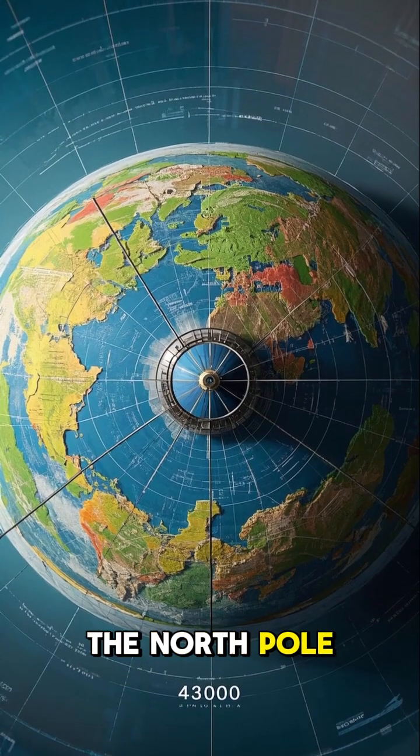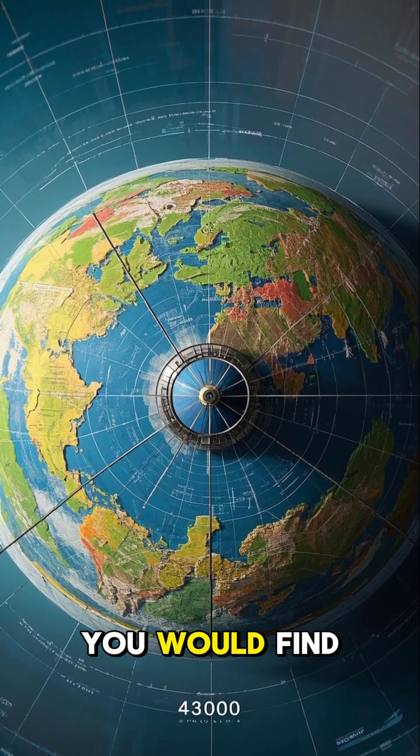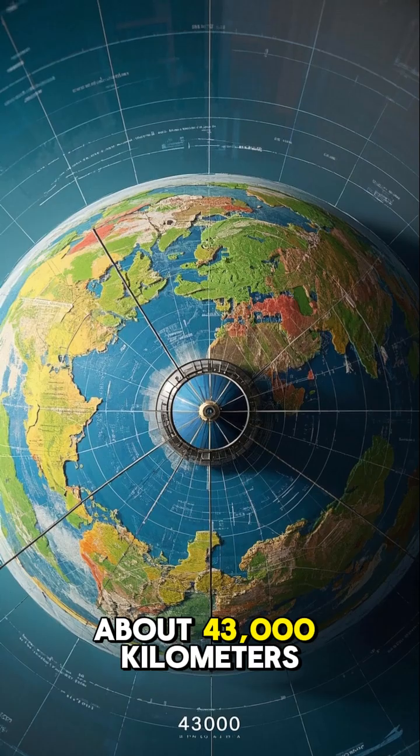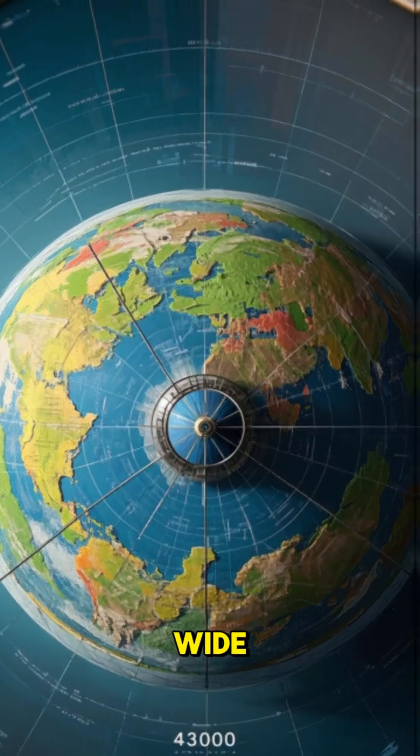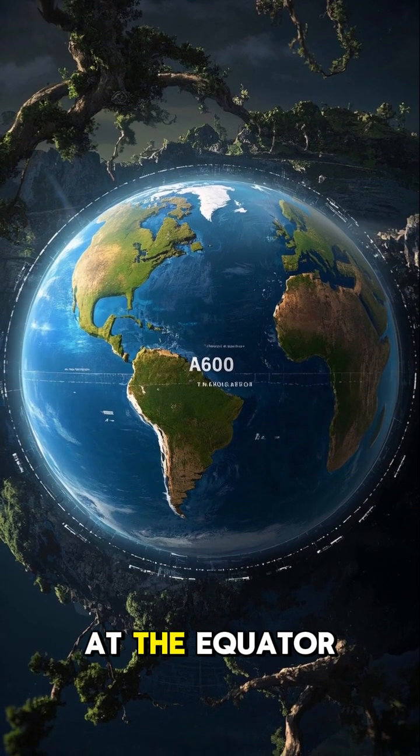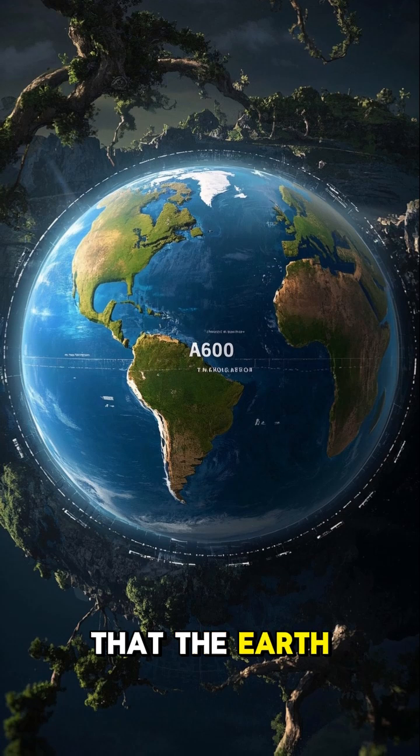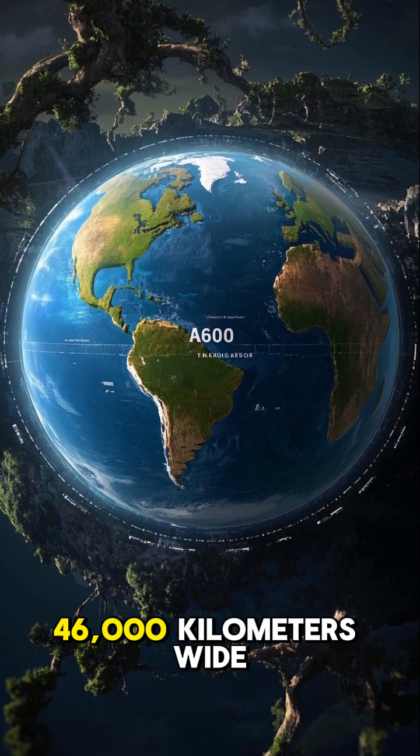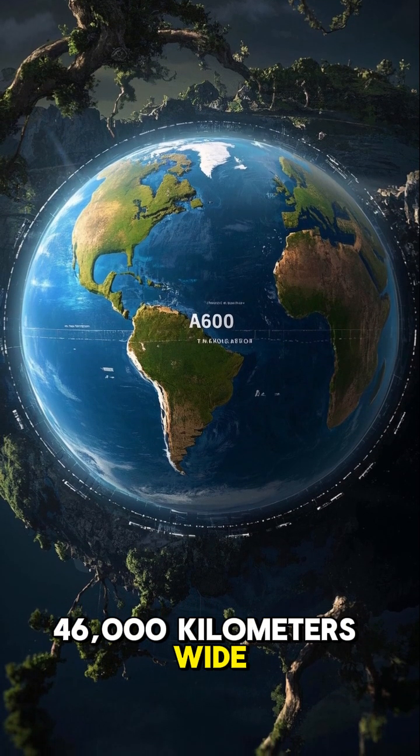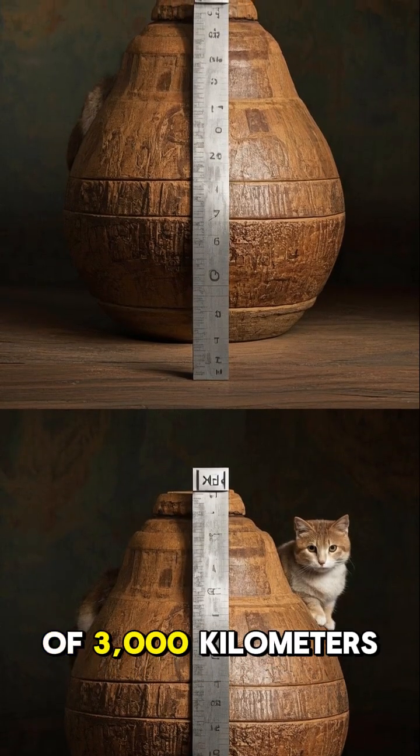If you were to stand at the North Pole and measure the Earth, you would find that it is about 43,000 kilometers wide. But if you were to do the same thing at the equator, you would find that the Earth is actually 46,000 kilometers wide. That's a difference of 3,000 kilometers.